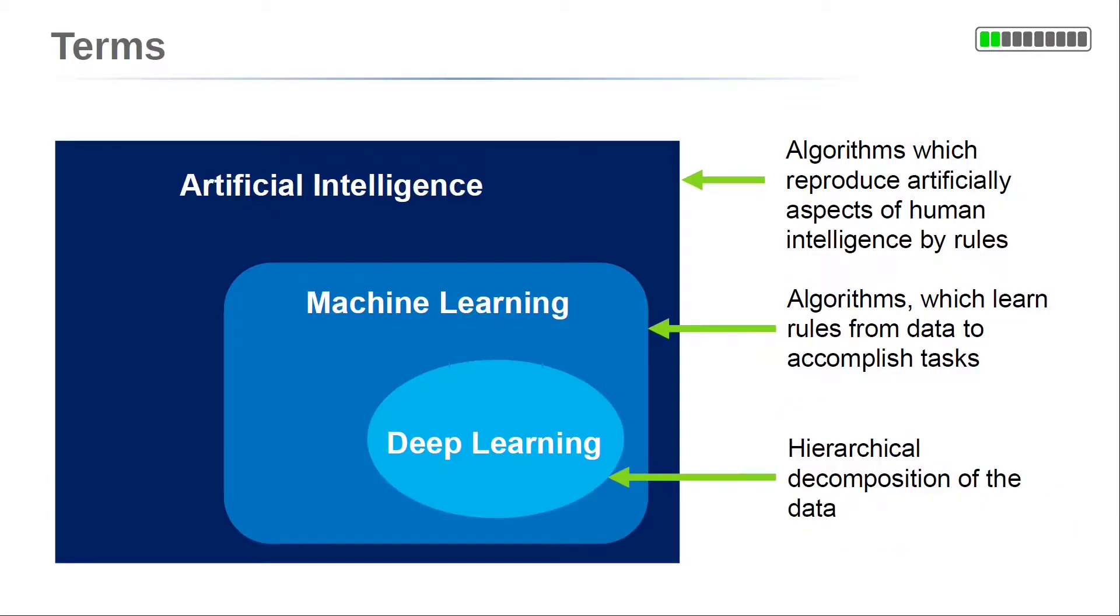A subfield of machine learning is deep learning. The algorithms of deep learning learn the rules from data in a special way. They produce a hierarchical decomposition of the data. For example, consider an image with a face on it. You can decompose the face into its parts. Starting from the small parts, like eyes, nose and mouth, you can get to the bigger picture by combining them, the face itself.